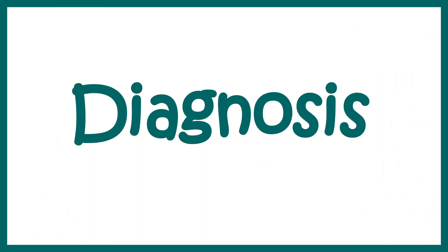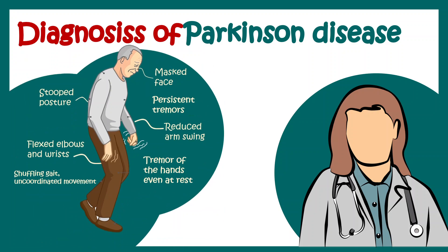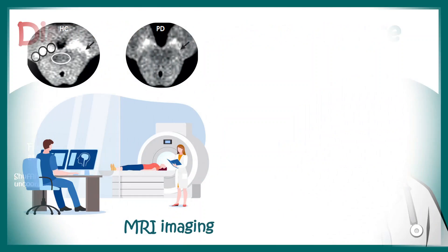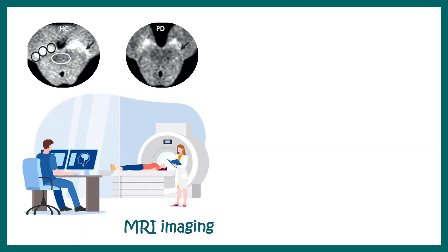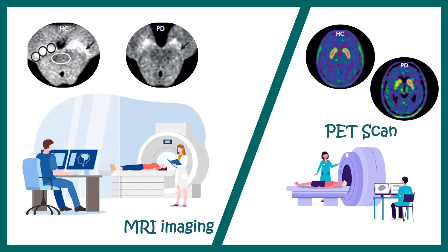Diagnosis of Parkinson's disease has no absolute test. However, with characteristic motor defects, a doctor can suspect the disease. When Parkinson's is suspected, MRI imaging is typically requested, where loss of neurons in the substantia nigra can be visualized, or alternatively a PET scan can be used.